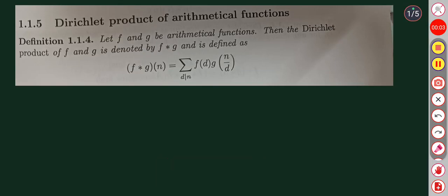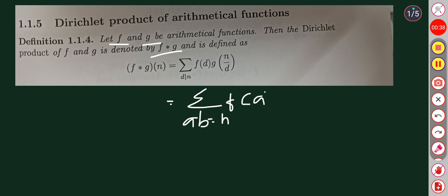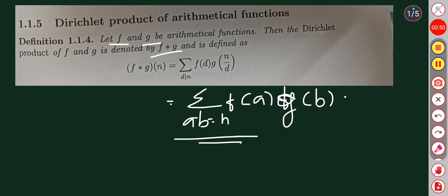Hello. Today we will study Dirichlet products of arithmetic functions. If f and g are arithmetic functions, then the Dirichlet product of f and g is denoted f star g, and is defined as: f star g of n equals the summation over d dividing n of f of d times g of n by d, which is equal to the summation over ab equals n of f of a times g of b.